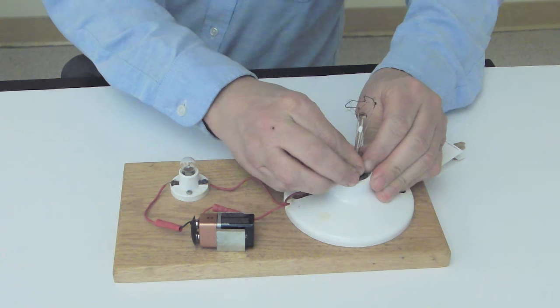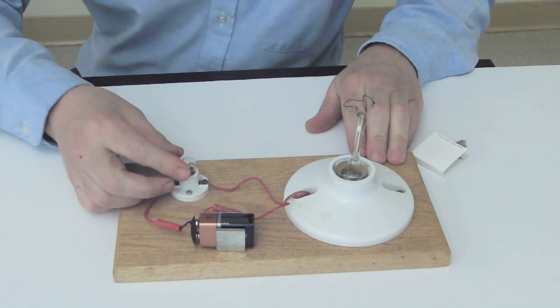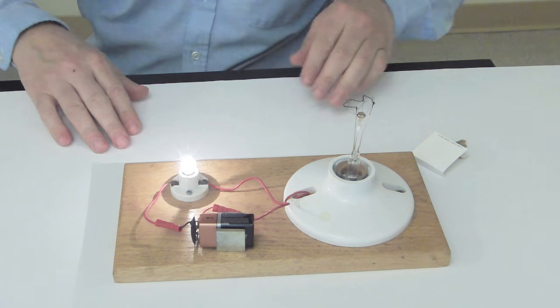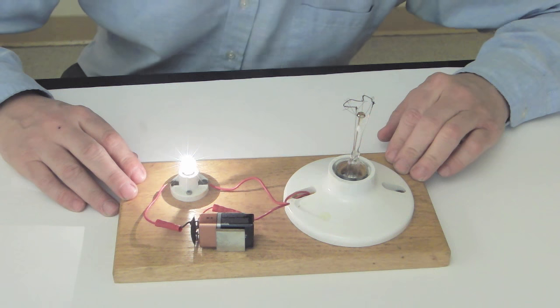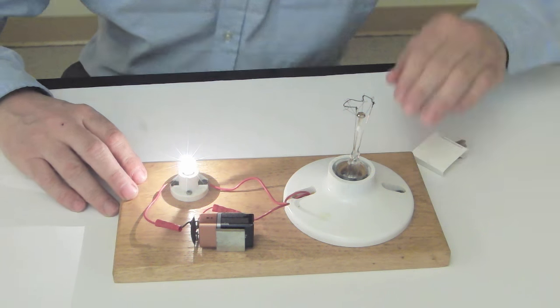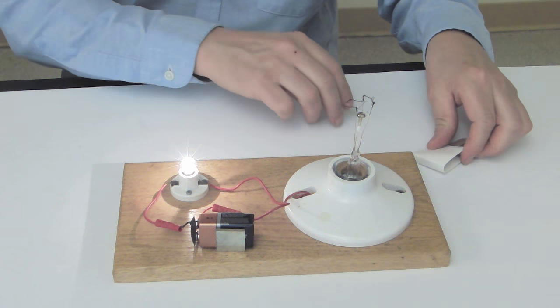Alright, so I'll screw this filament in, and then I'll tighten the bulb up, and that'll turn it on. Now, let me blow on it. We can see that it got a little bit brighter.